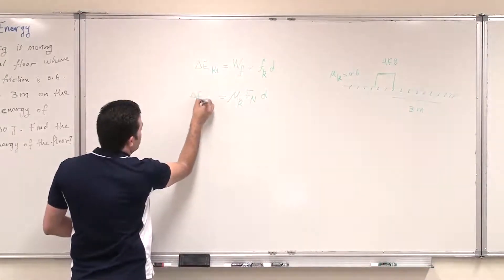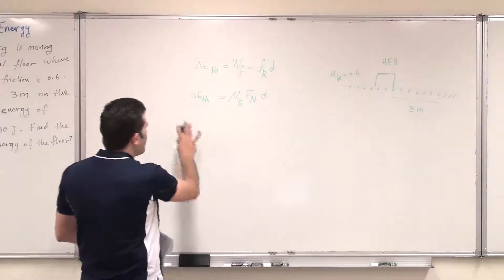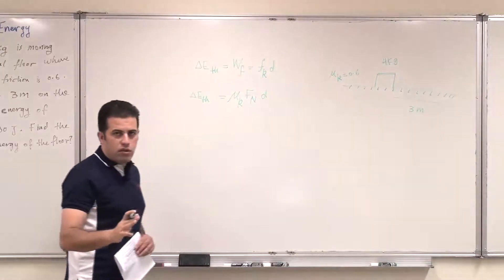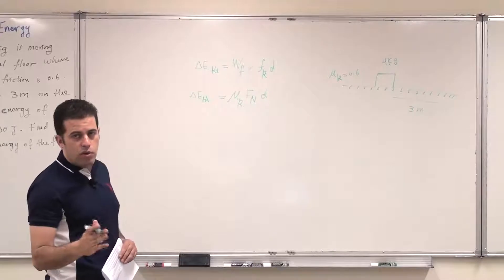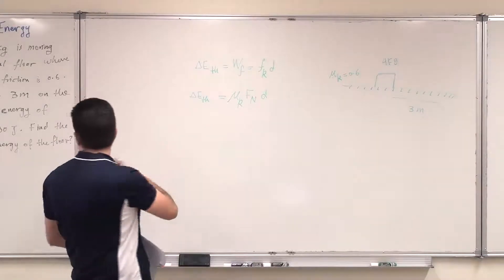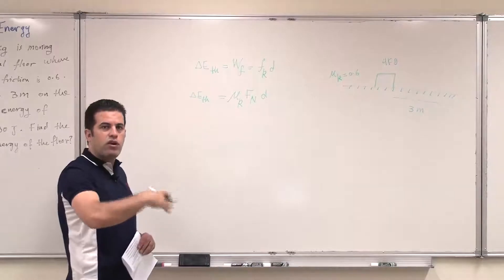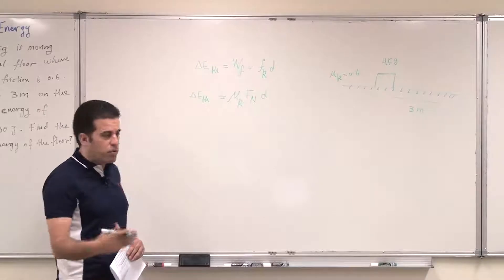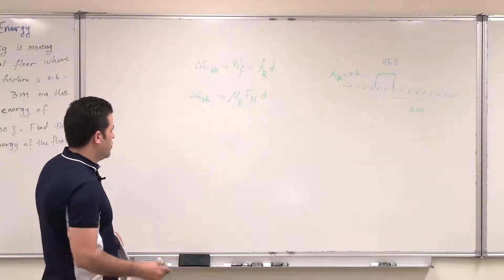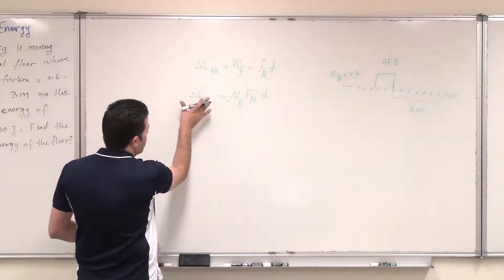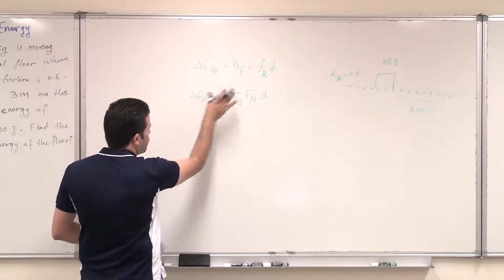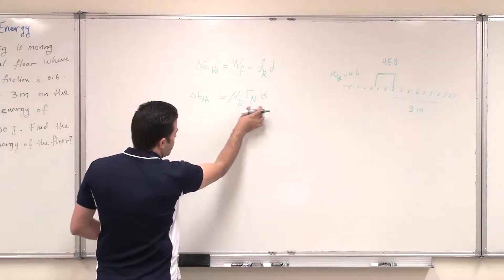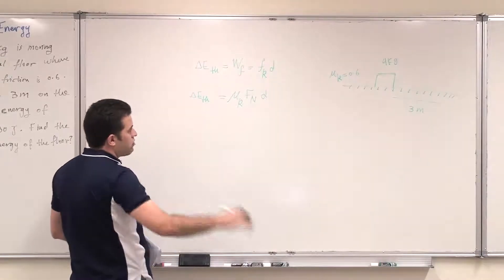This is the change in thermal energy. First I will find the total change in thermal energy, which is split between the floor and the block. Then I will find the increase in thermal energy of the floor by subtracting the increase in thermal energy of the block from the total. So delta E thermal equals the coefficient of kinetic friction multiplied by the normal force times the displacement.